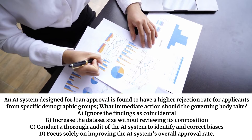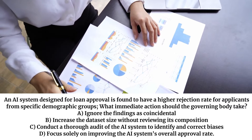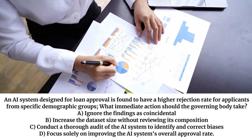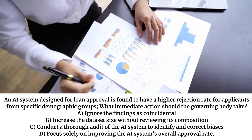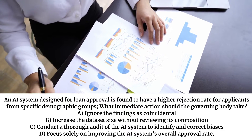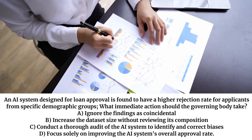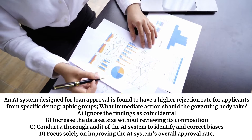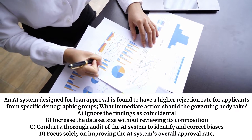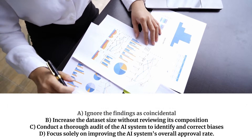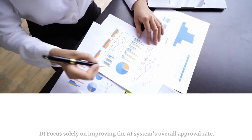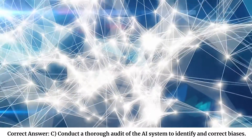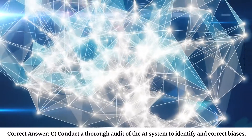An AI system designed for loan approval is found to have a higher rejection rate for applicants from specific demographic groups. What immediate action should the governing body take? A. Ignore the findings as coincidental. B. Increase the dataset size without reviewing its composition. C. Conduct a thorough audit of the AI system to identify incorrect biases. D. Focus solely on improving the AI system's overall approval rate. Correct answer: C. Conduct a thorough audit of the AI system to identify incorrect biases.